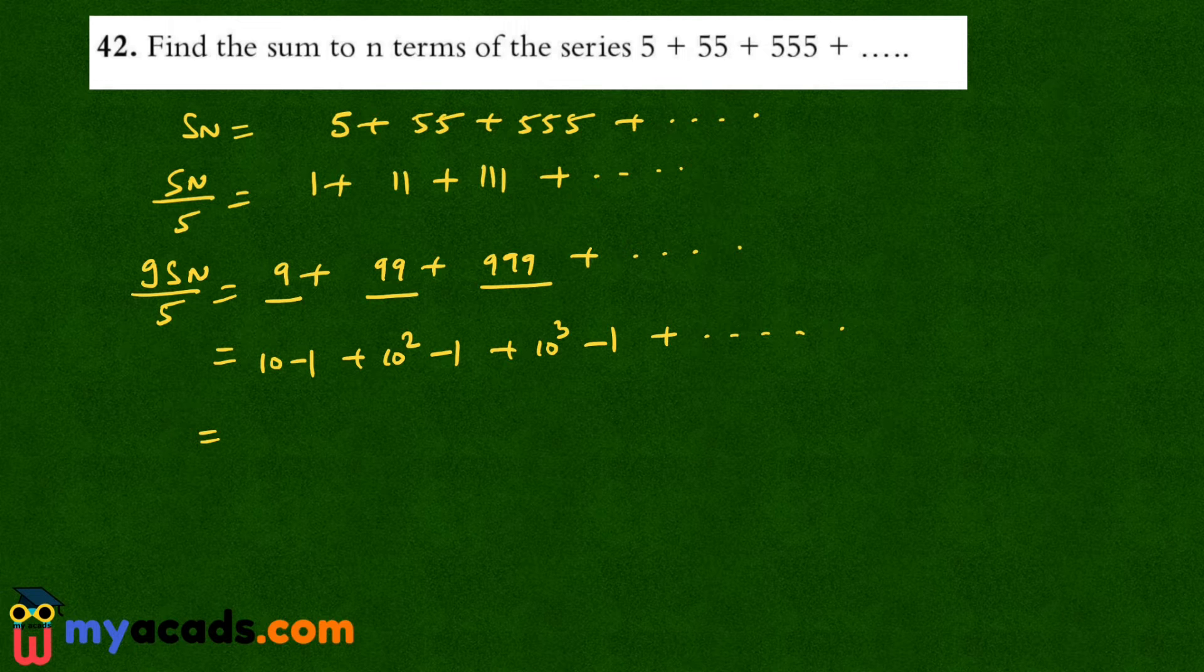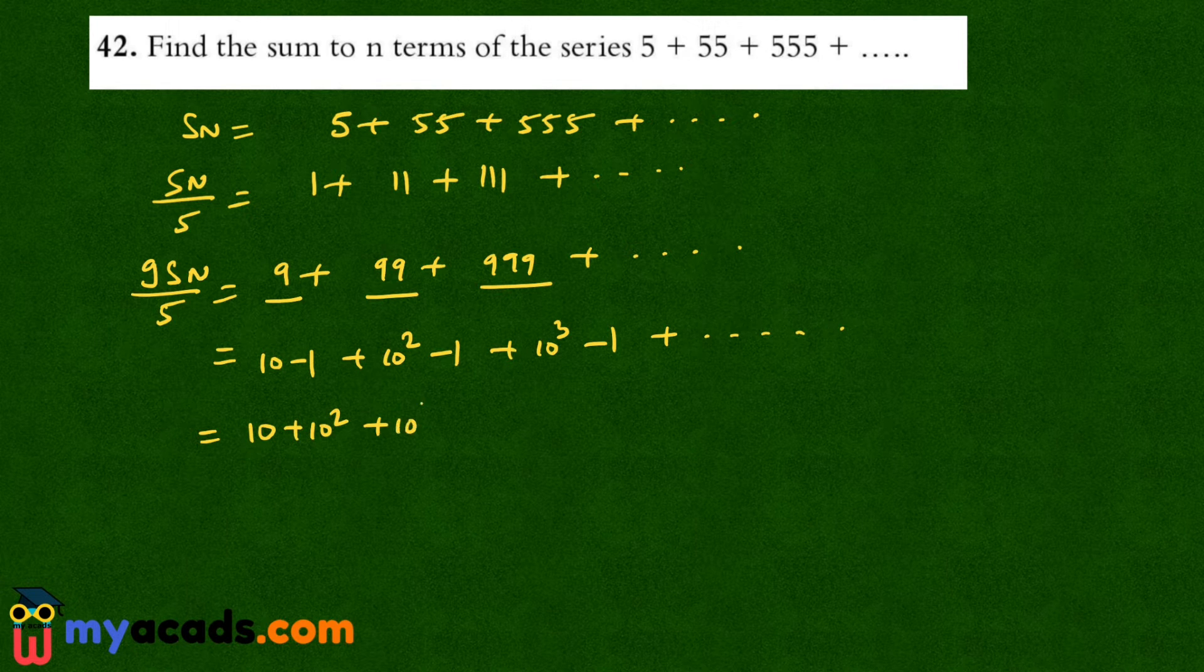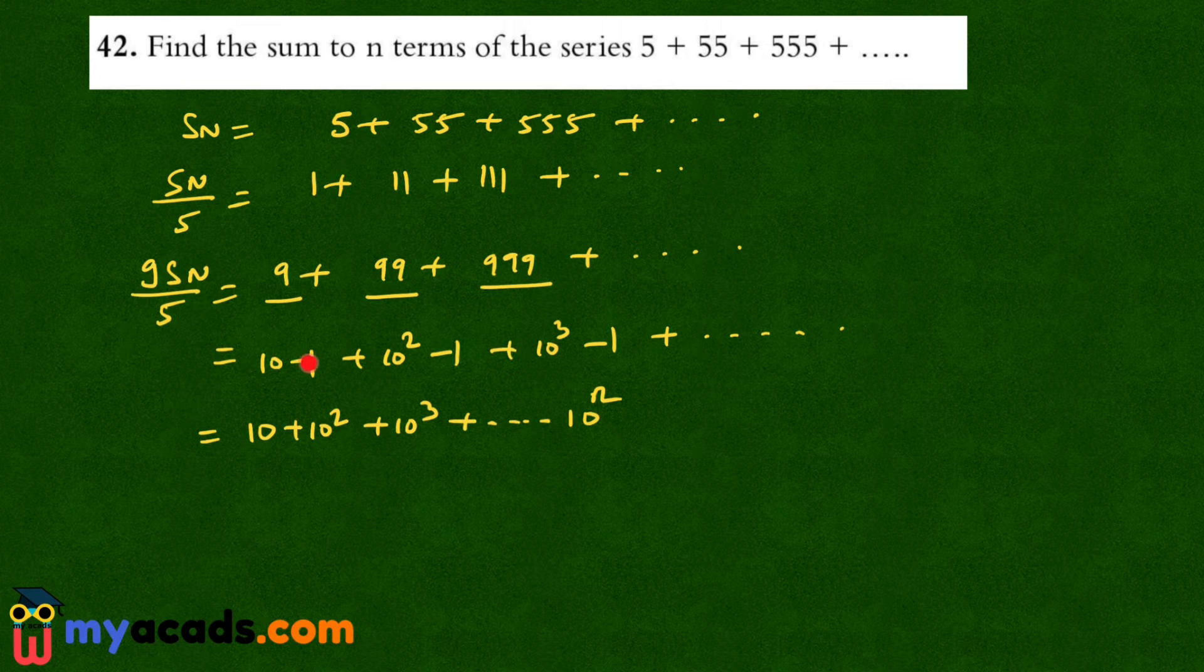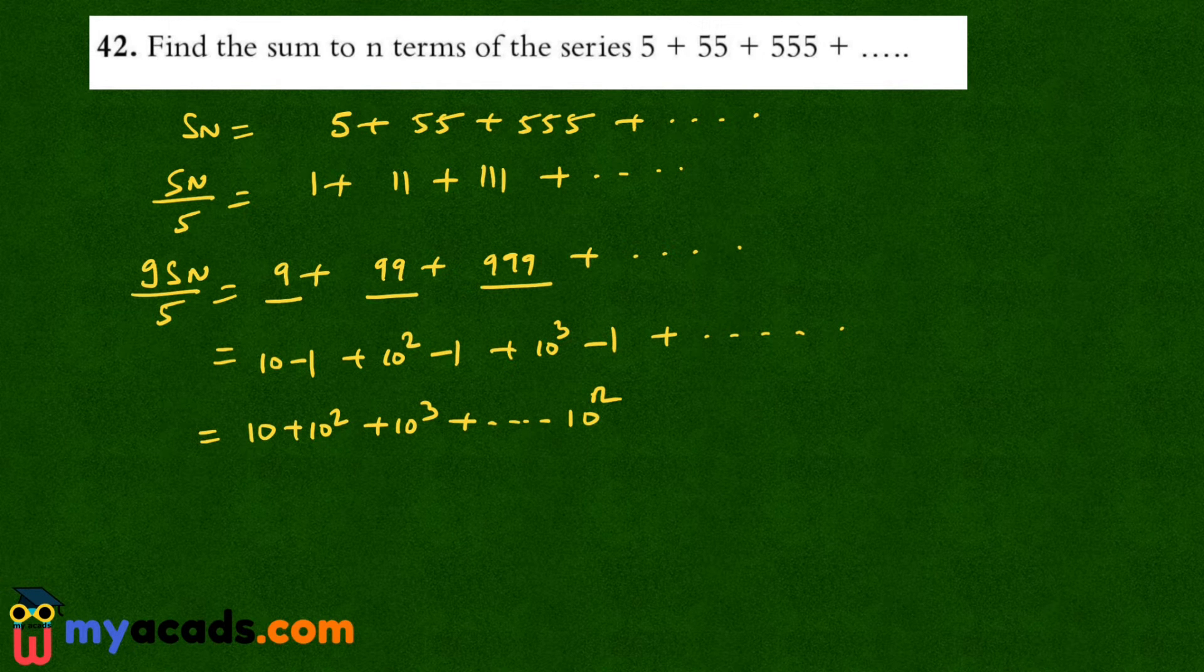So this will become 10 plus 10 raised to the power 2 plus 10 raised to the power 3 and so on till 10 raised to the power n. Now this minus 1 will come n times, so this will become minus n.